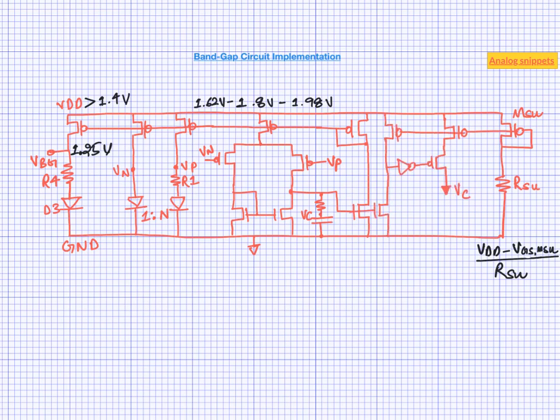This is one way of doing it. This branch is comparing the startup current with bandgap current. When there is no current in the bandgap, this node is pulled high by the startup current and the inverter output is zero. Hence this PMOS is on. When sufficient current builds up in the bandgap, the node is pulled low and the current dumping is stopped.